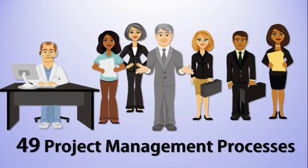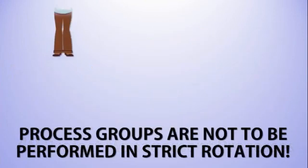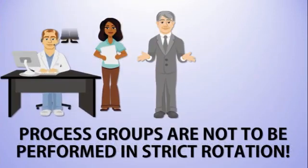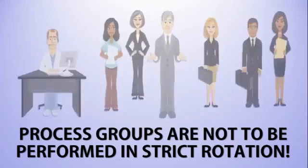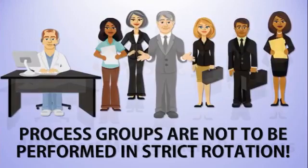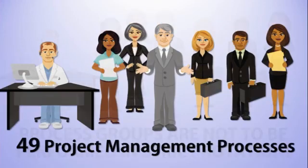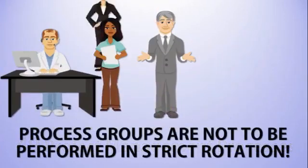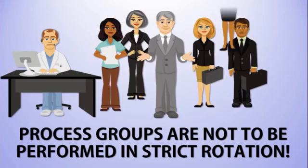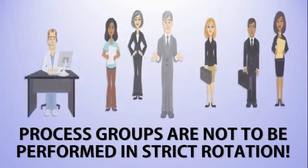There are 49 processes in the PMBOK Guide 6th edition and they're broken out by process group. These process groups are not meant to be done in linear rotation. Some people read the PMBOK Guide, go through the order of the chapters, and think project management is meant to be done in that fashion — it's not. Project management is extremely situational, dynamic, and iterative. For that reason, do not think of the processes as being in any strict order.